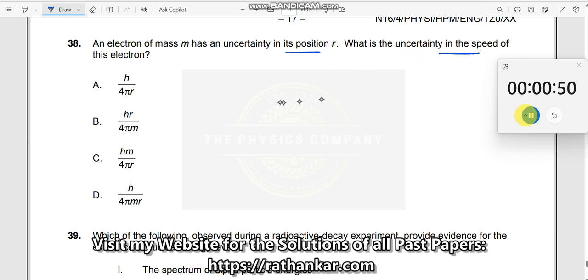Okay, uncertainty in the speed. What does Heisenberg's uncertainty principle say? It says delta x times delta p equals h by 4 pi. This is what the uncertainty principle says.